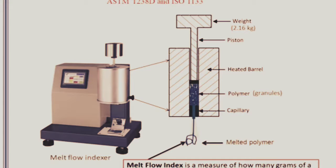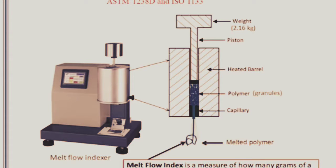First, the barrel is preheated at the desired temperature, then the sample is loaded and allowed to melt for a certain time. The sample should be packed properly inside the barrel to avoid formation of air pockets. After preheating, a 2.16 kg or 5 kg standard weight is introduced onto the piston to apply force. As the weight exerts the force, the material immediately starts to flow. A sample of the melt is collected for 10 minutes and weighed accurately. The weight of the material obtained is the material's MFI value.